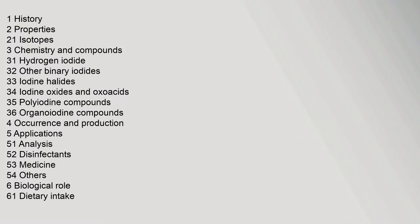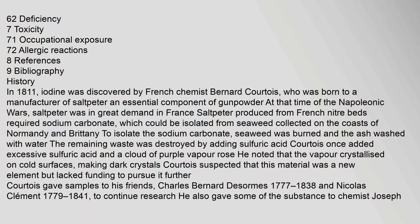Contents: 1. History; 2. Properties, including Isotopes; 3. Chemistry and Compounds, covering Hydrogen Iodide, Other Binary Iodides, Iodine Halides, Iodine Oxides and Oxoacids, Polyiodine Compounds, and Organoiodine Compounds; 4. Occurrence and Production; 5. Applications including Analysis, Disinfectants, Medicine, and Others; 6. Biological Role covering Dietary Intake and Deficiency; 7. Toxicity; 8. References and Bibliography.